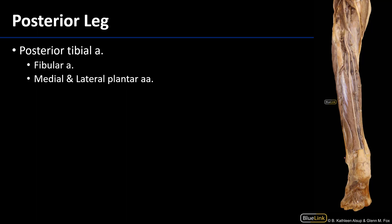The popliteal artery continues down through the popliteal fossa and turns into the posterior tibial artery. That posterior tibial artery gives off a fibular artery. The fibular artery provides supplemental blood supply to the lateral compartment of the leg. The posterior tibial artery continues inferiorly as the dominant blood supply to the posterior compartment of the leg. At about the level of the calcaneus, it divides into a medial and a lateral plantar artery. That lateral plantar artery is a large contributor to the plantar arterial arch.